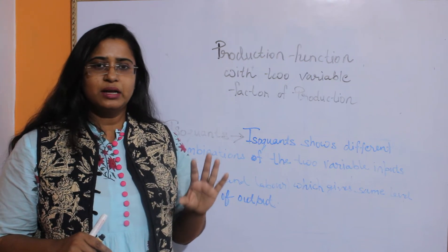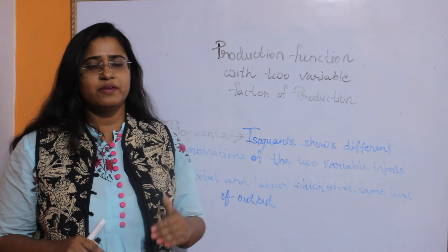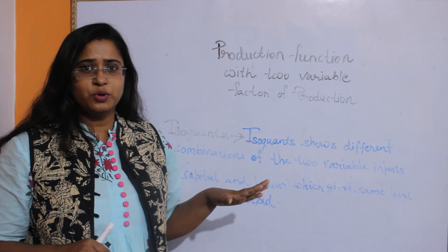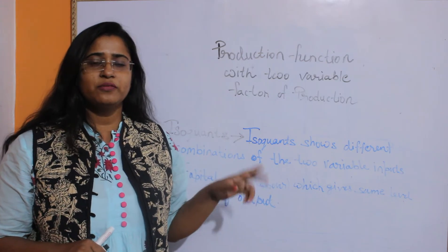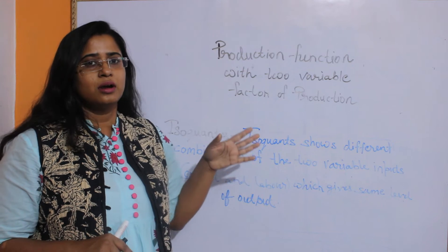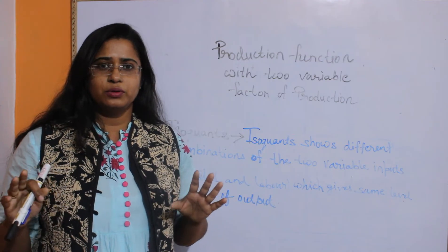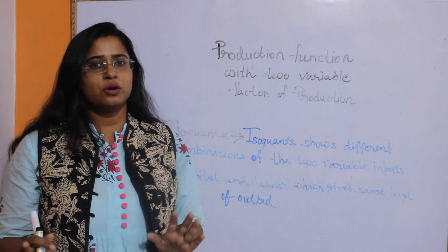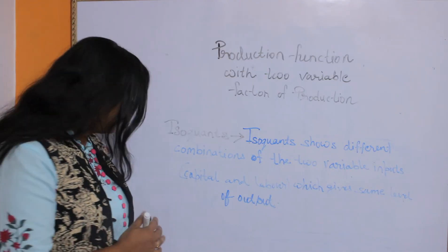What we studied in the indifference curve is that it gives the same level of satisfaction with the consumption of two goods. But we are studying the production process and production analysis, so we are having two inputs — the factors of production which will be converted into some output. So the isocon is the locus of some particular amount of output using different combinations of the inputs or factors of production.